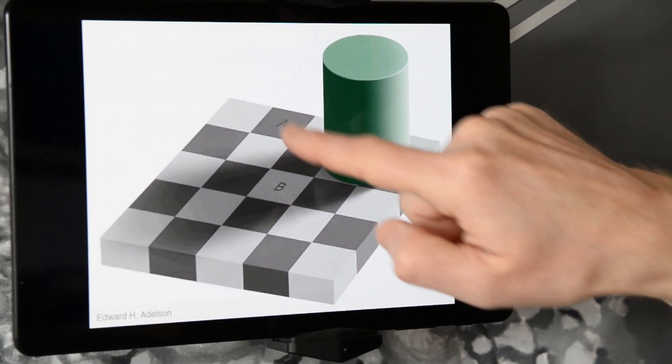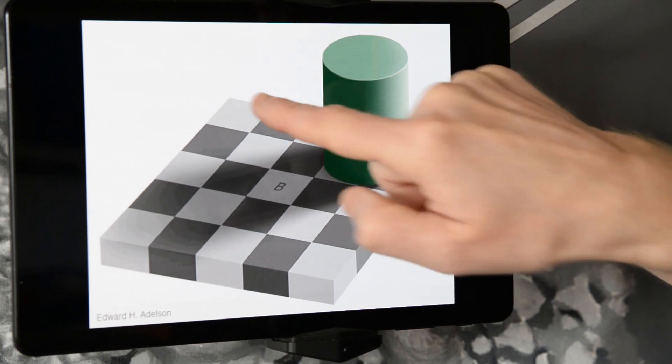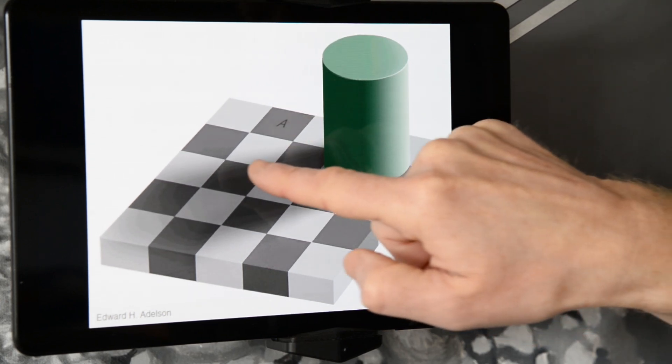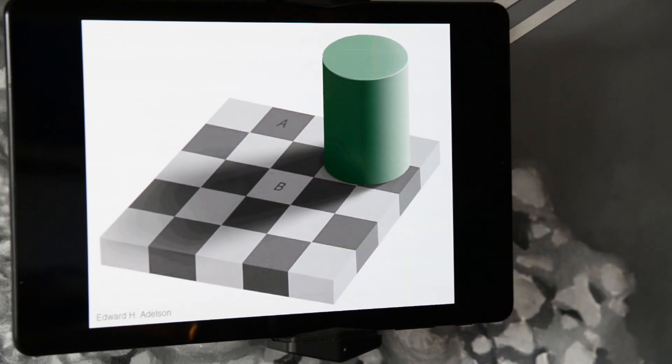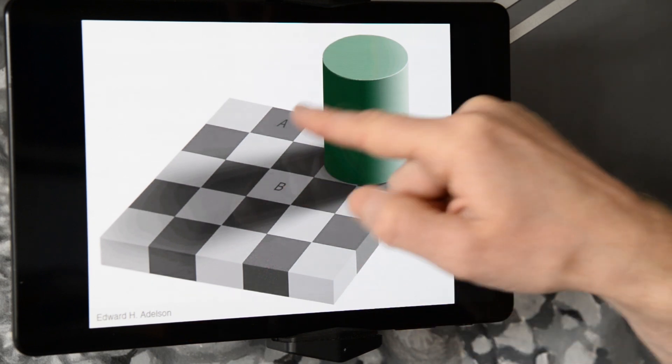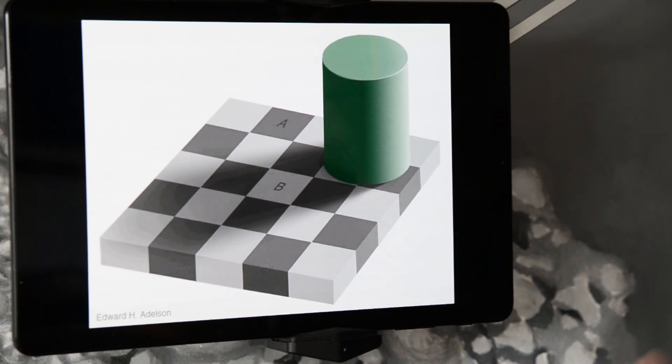But because of their relative contrast, because A is surrounded by lighter squares and because B is surrounded by darker squares, B looks lighter, A looks darker. And that is how easily your brain can get tricked when it's looking at contrast.